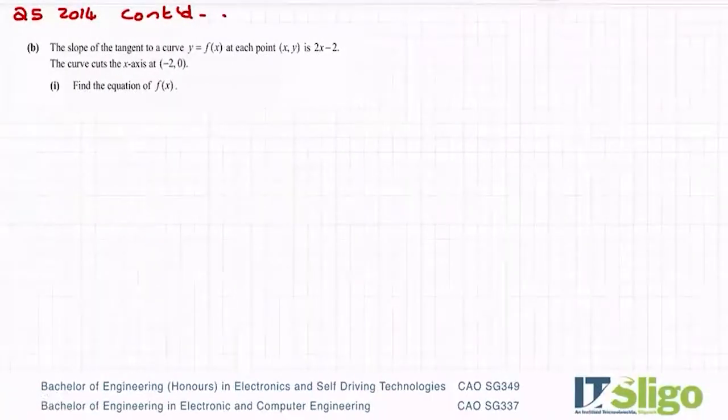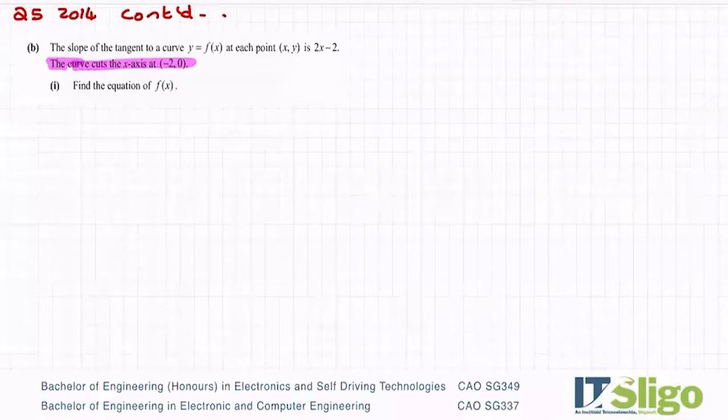The slope of the tangent to a curve, y equals f of x at each point (x, y), is 2x minus 2. The curve cuts the x-axis at (-2, 0). Find the equation of f of x. So this is a true example of them exploring that relationship between differentiation and integration and them being the opposite of each other. Slope of the tangent to the curve you should know is dy dx. So what they're telling you there is that dy dx, the slope of the tangent to the curve is 2x minus 2, and they're asking you then to find f of x, which is like the original function.